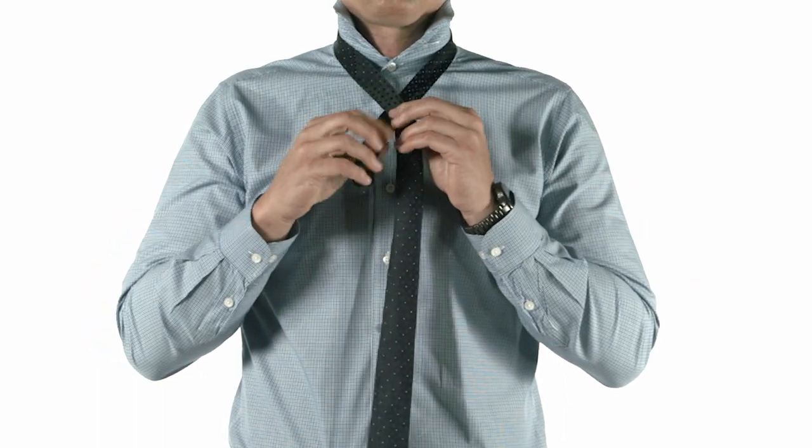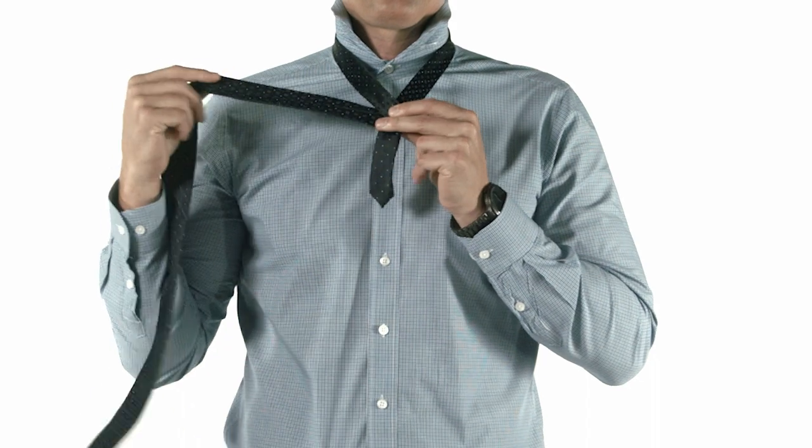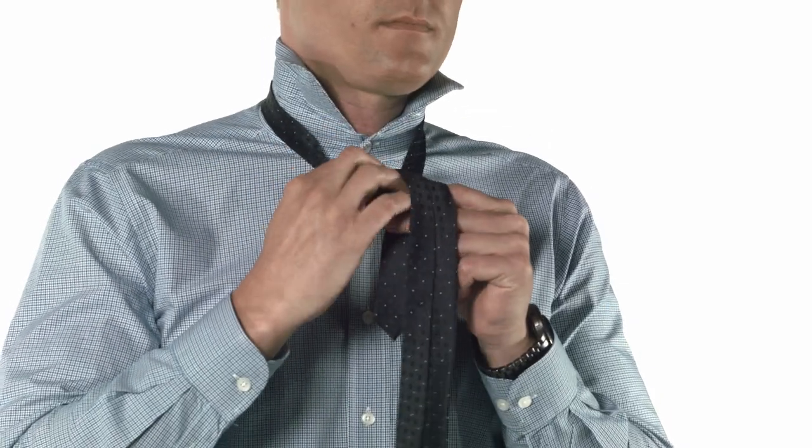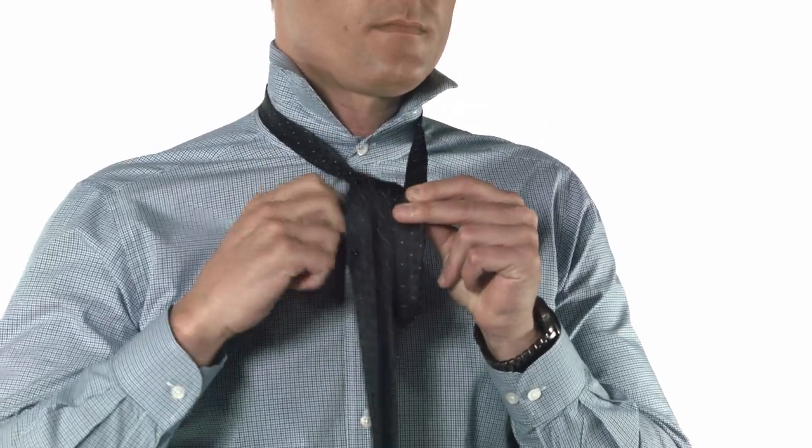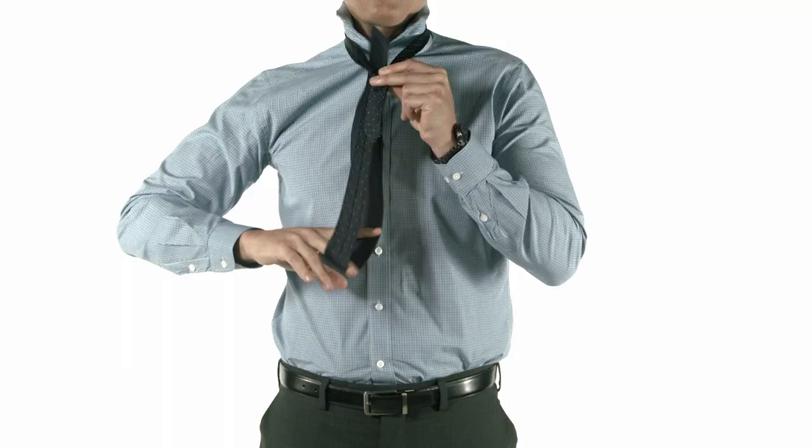Take the wide end and bring it across the narrow end. Pull it underneath and up and then slide it through between your neck and the knot and pull it out to the left side of your chest. This is what it should look like.